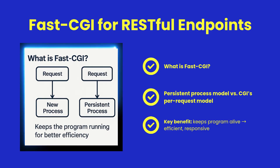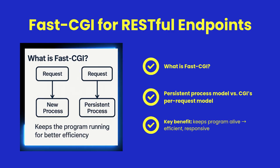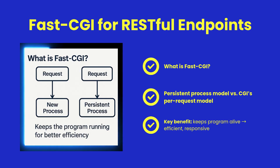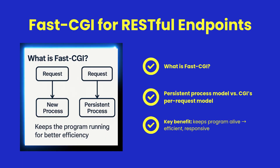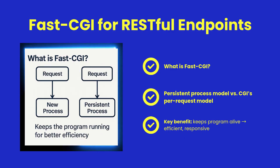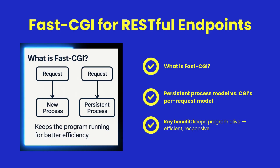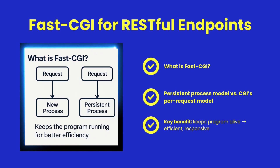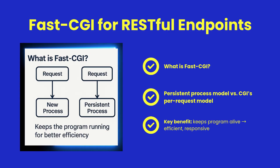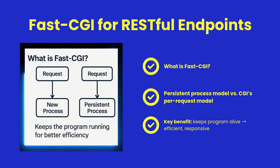Traditional CGI created a brand new process for each request, forcing the program to restart every time. FastCGI, by contrast, keeps the handler alive, retaining memory and connections across requests. This persistent model is the foundation for fast, efficient ShearPower web APIs.